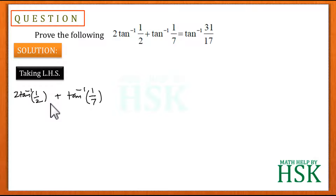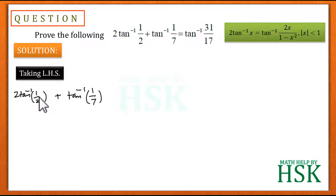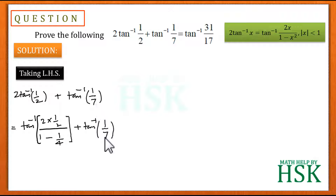For 2·tan⁻¹(1/2) we apply the result: 2·tan⁻¹(x) = tan⁻¹(2x / (1 − x²)), where |x| < 1. Here x = 1/2, which satisfies the condition, so we write 2·tan⁻¹(1/2) as tan⁻¹(2·(1/2) / (1 − (1/2)²)) = tan⁻¹(1 / (1 − 1/4)), and the term tan⁻¹(1/7) remains as it is.